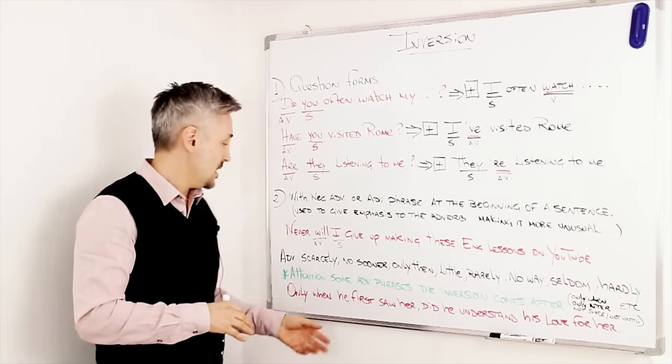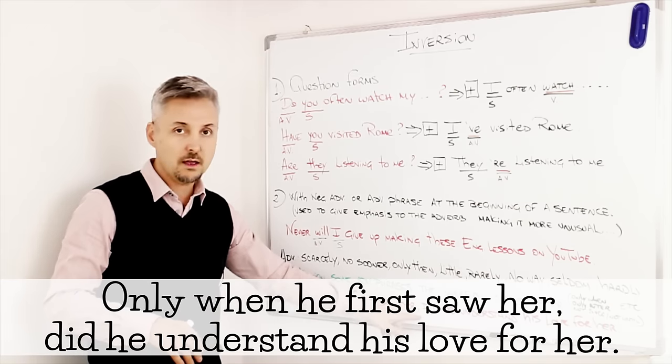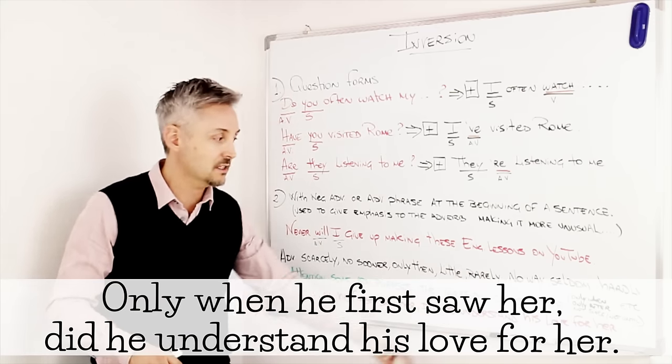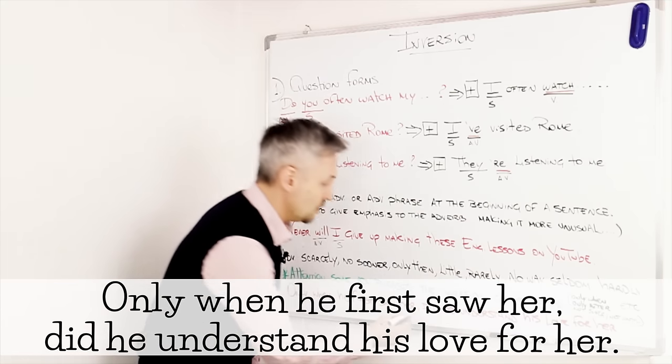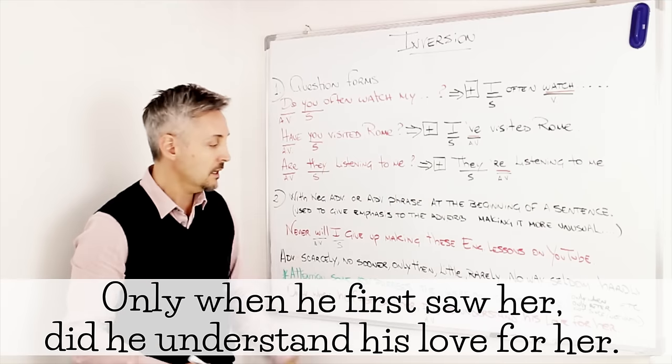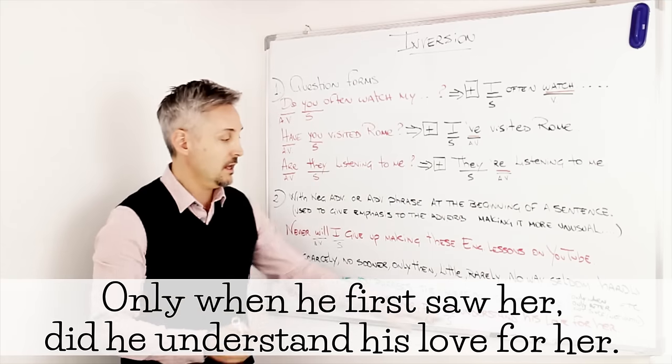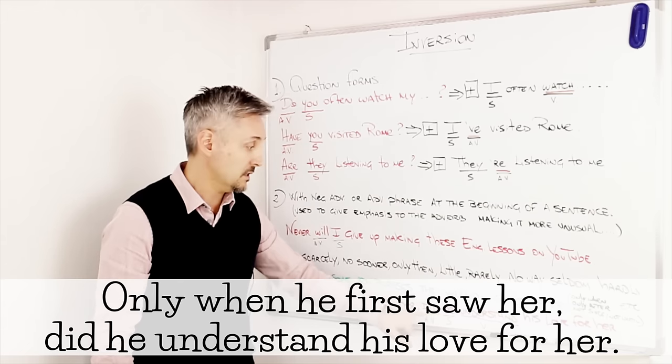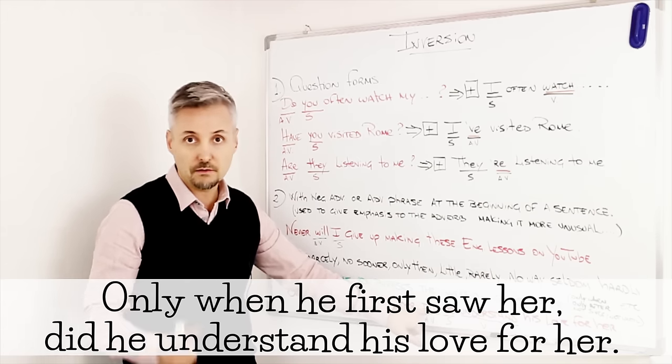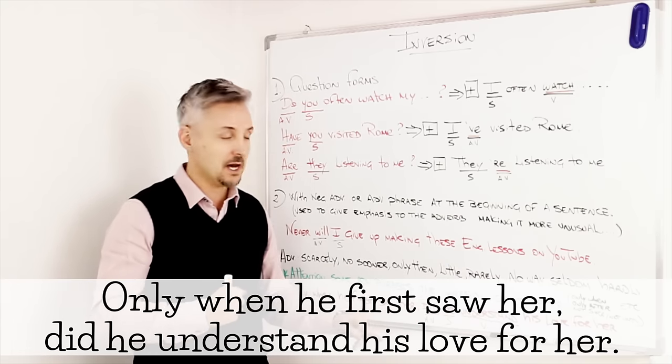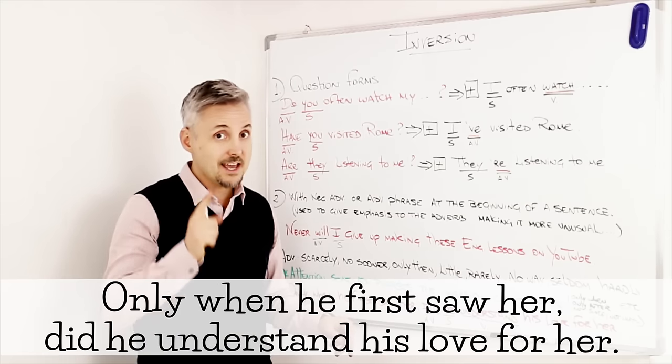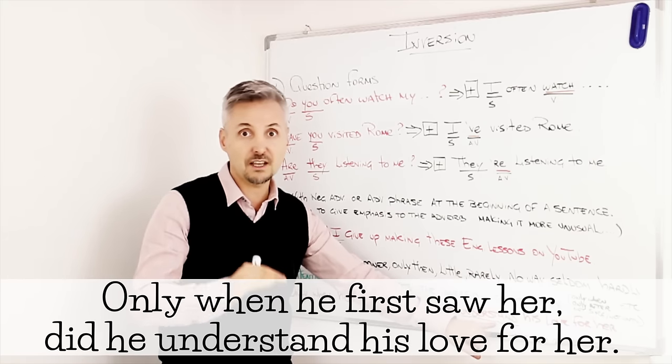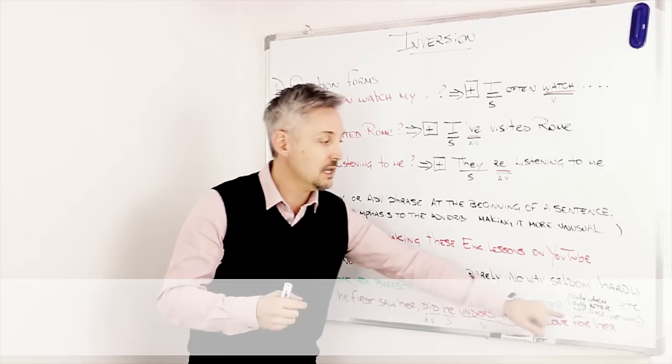So, the example that I wrote here is, only when he first saw her, here comes the inversion. Did he understand his love for her? So, the inversion is right here, auxiliary verb did, then we have the subject. And then, the verb, the infinitive verb, because obviously I added did before. So, I made the sentence in the past. Did he understand? Do not make the mistake to say, did he understood? No. Did he understand? So, infinitive verb, or the base of the verb. Did he understand his love for her?